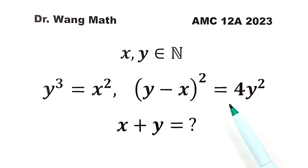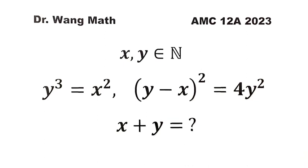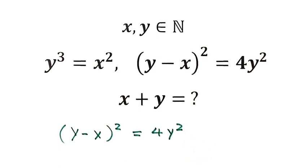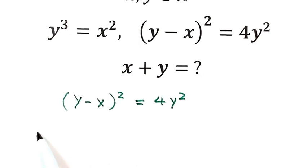So let's start from this given equation: (y minus x) squared equals 4y squared. First, let's move this term to the left-hand side. Then (y minus x) squared minus 2y squared equals 0.